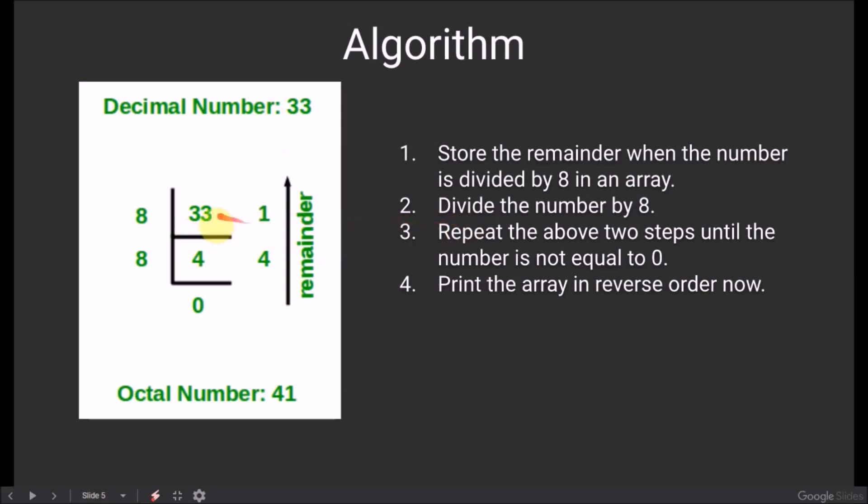Now step 2: We divide 33 by 8 which gives 4. As the number is not 0, we continue this step. 4 divided by 8 will give quotient 0 and remainder is stored in the array which is 4.